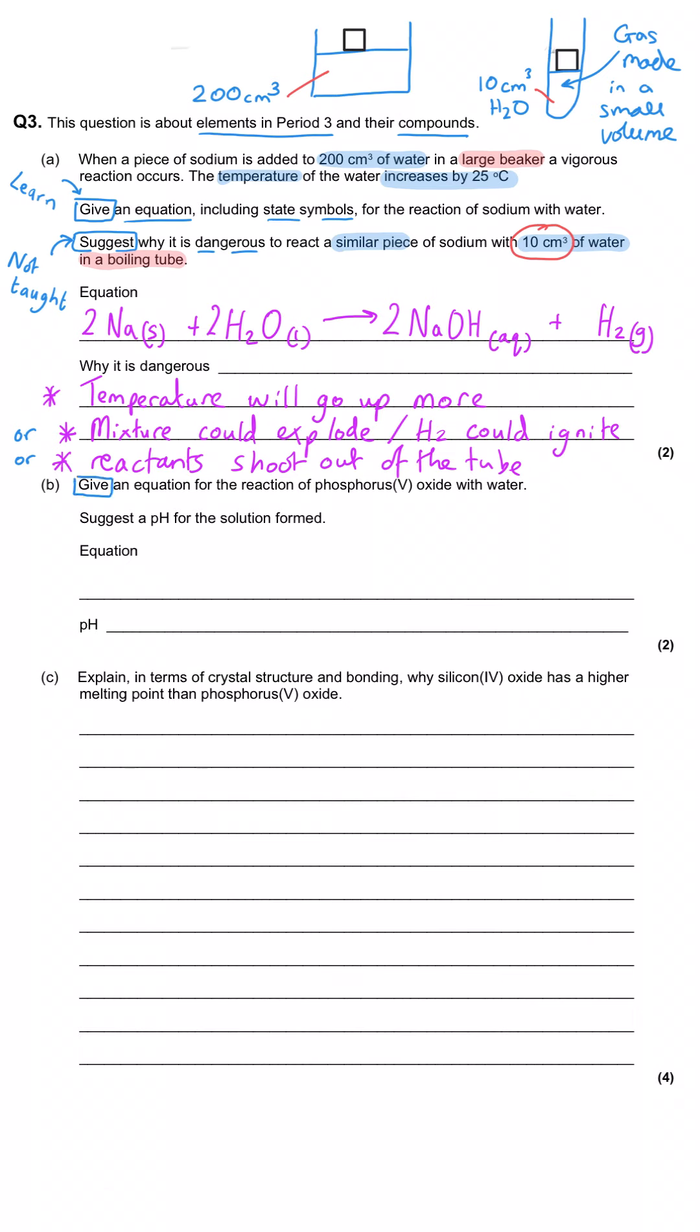Part B: give an equation for the reaction of phosphorus pentoxide with water and suggest a pH for the solution that's formed. Phosphorus pentoxide is named for the oxidation state of the phosphorus in the oxide and so the formula is P₄O₁₀ because each oxygen has an oxidation state of minus 2, so that means minus 20 for all of them is being balanced by four lots of plus 5.